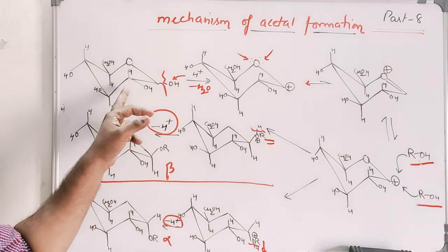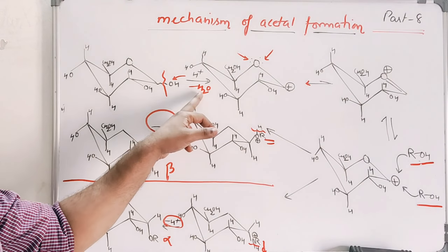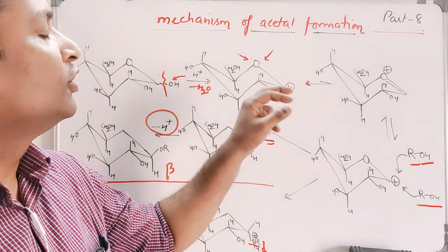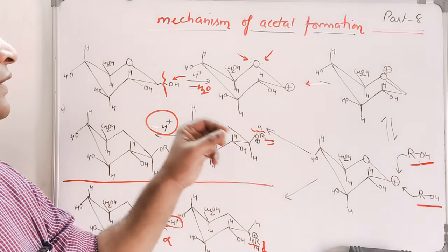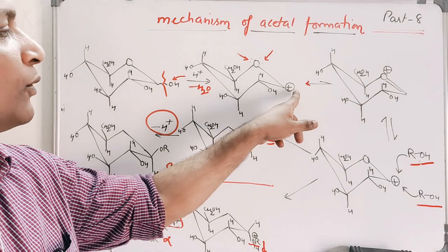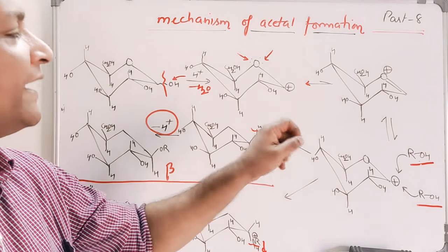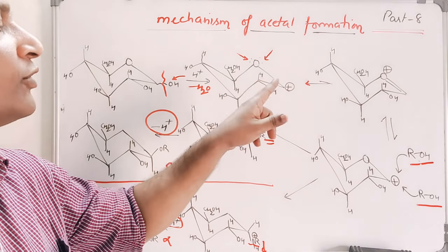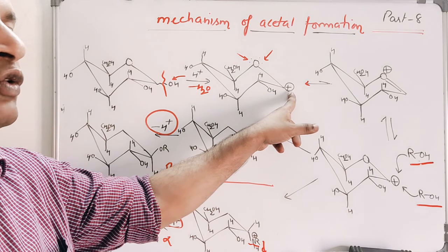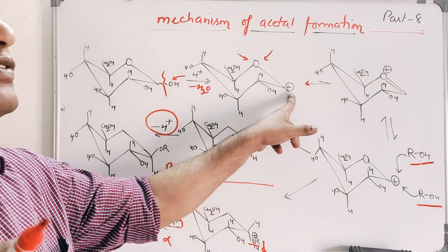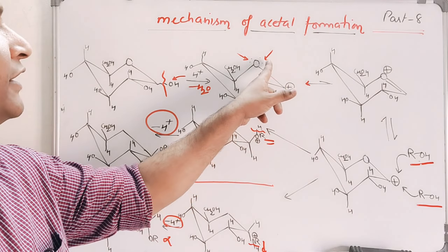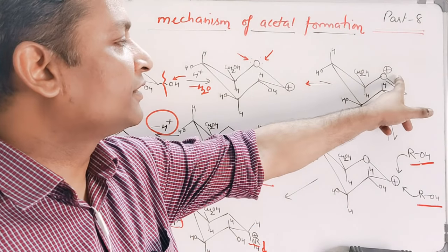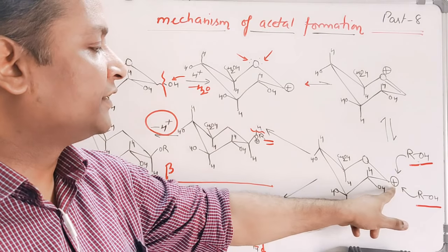You can see this very clearly: protonation of OH, followed by dehydration, gives us the carbocation. An important point to note is that only the anomeric OH is affected, because only when this OH is removed do we get a carbocation that can be delocalized by the lone pair of electrons on the ring oxygen. If carbocation formation occurred elsewhere, no such delocalization would be possible. Hence, only the anomeric OH is affected — only the anomeric OH has the tendency to undergo delocalization with the lone pair of the ring oxygen.